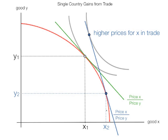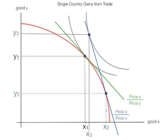The country can consume more of product X and more of product Y both. We can see a slight increase in the consumption of X, and now instead of producing Y, it's buying Y internationally from other countries because it's gotten a lot of revenue from selling X abroad. Again, think oil or think Colombian coffee.